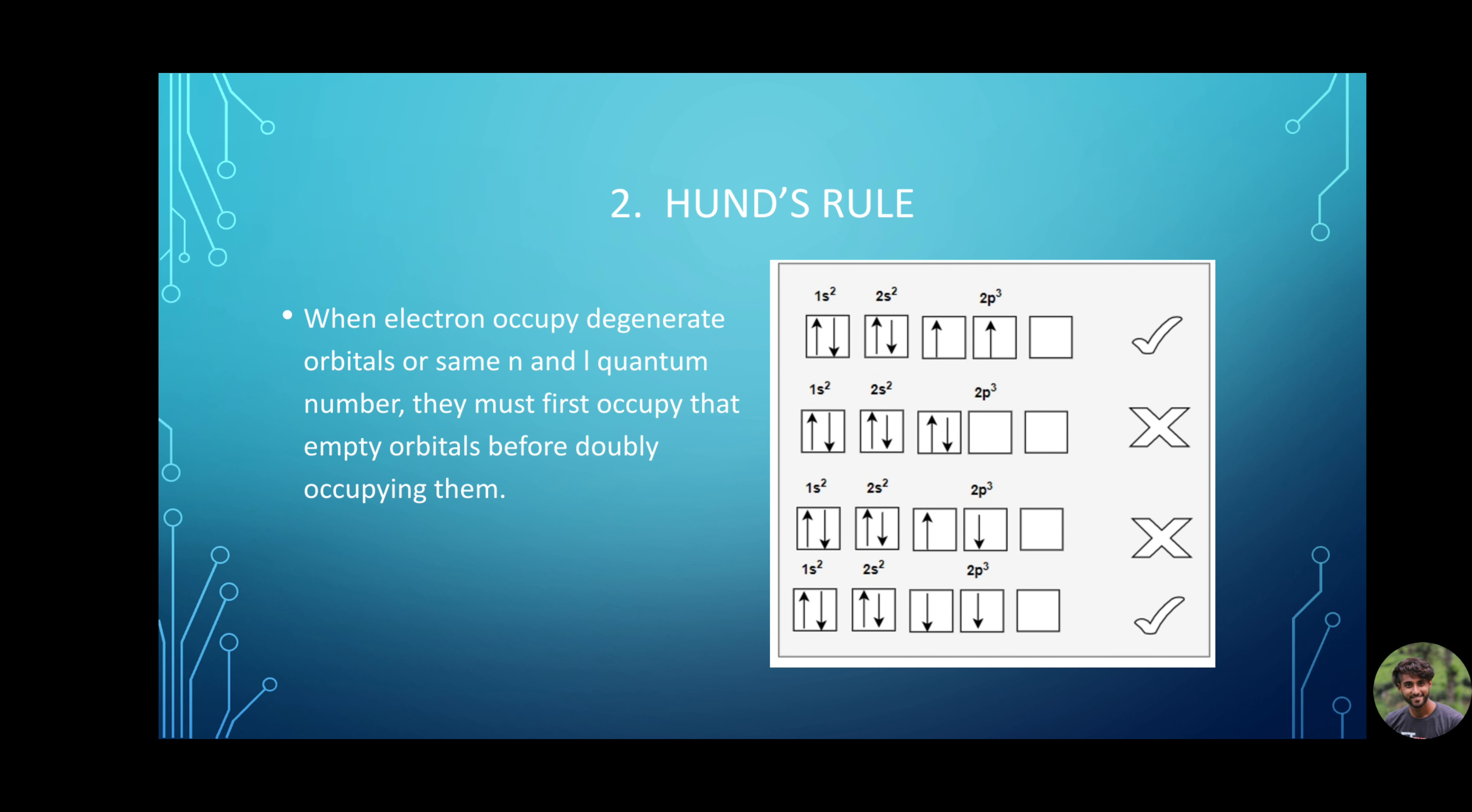Now, let us continue with the orbital filling rules. Hund's rule. Hund's rule states that when electrons occupy degenerate orbitals or same n and l quantum numbers, they must first occupy the empty orbitals before doubly occupying them. Here is an illustration. The second and third figures are not correct. The first and last figures are correct. The electrons first are half filled. Only then are they completely filled.